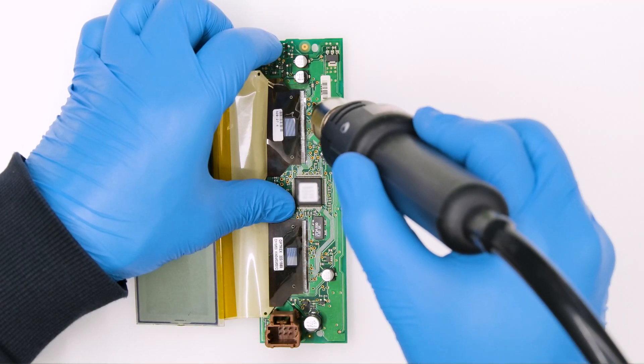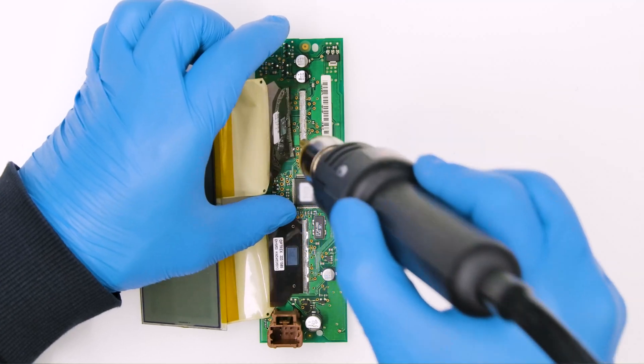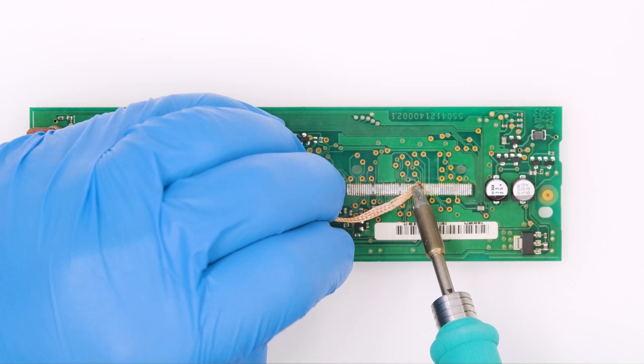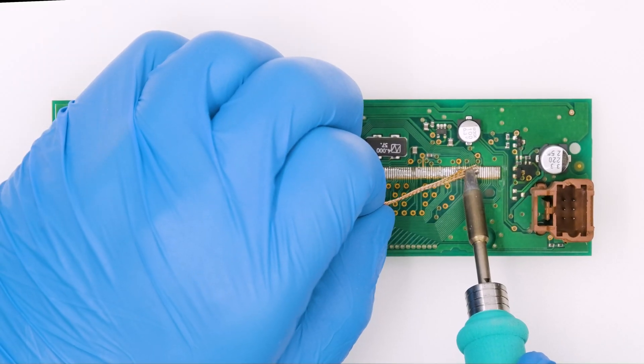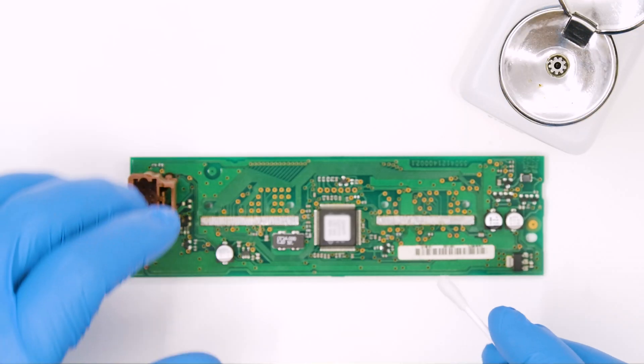With the hot air disoldering iron, detach the two FPCs. With the solder wick braid and the soldering iron with chisel tip, remove any tin residues from both pads' rows. Then clean with some solvent.